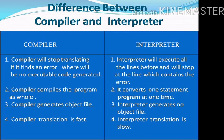A compiler compiles the program as a whole. But an interpreter converts one statement of the program at a time.